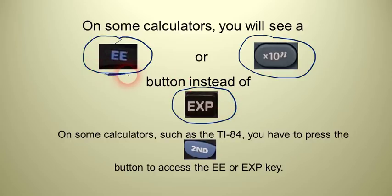EE is pretty common on TI, Texas Instruments calculators. Some of the newer calculators, you're seeing the times 10 to the N button. Also, some of the Sharp calculators use that. A lot of the Casios use EXP.